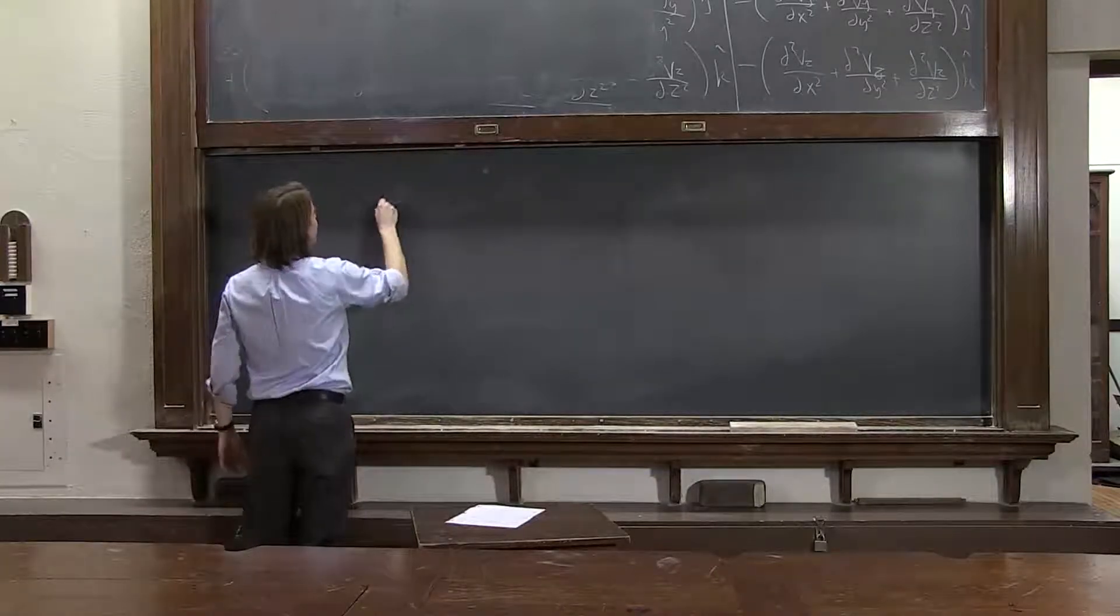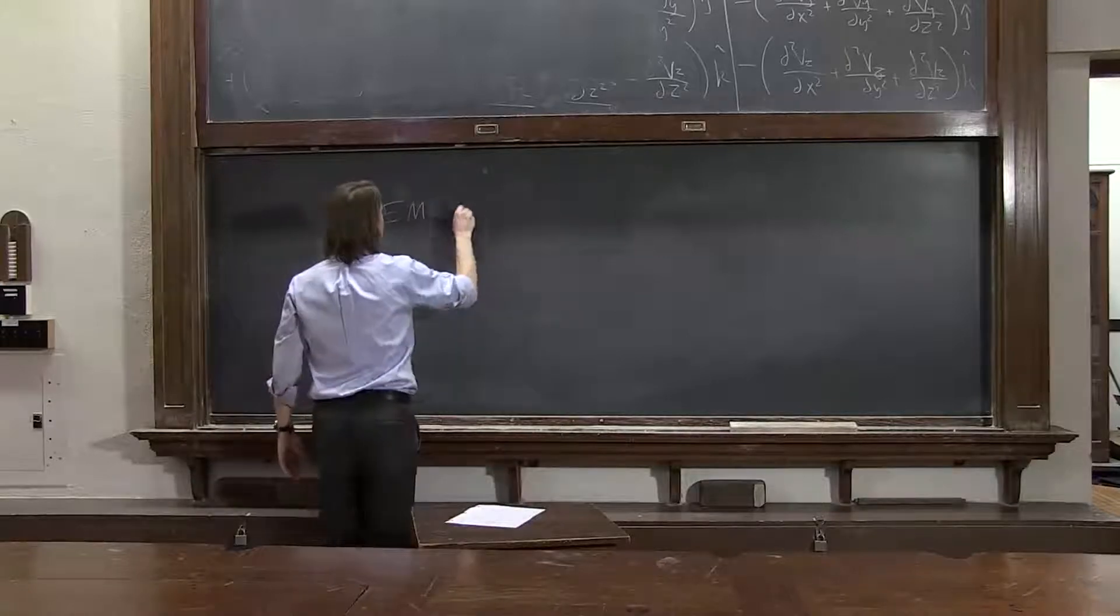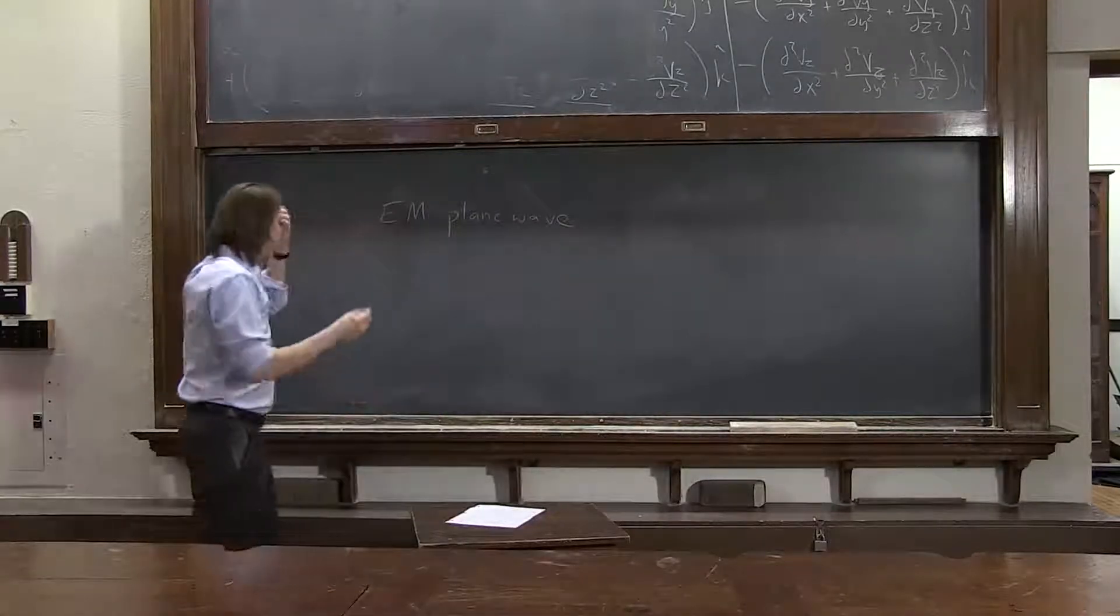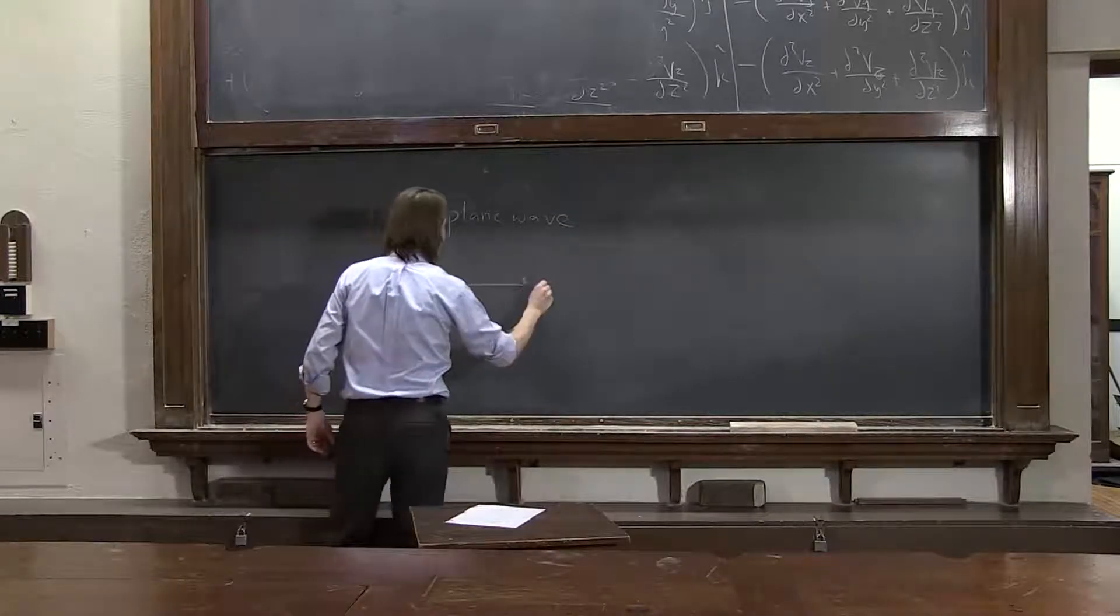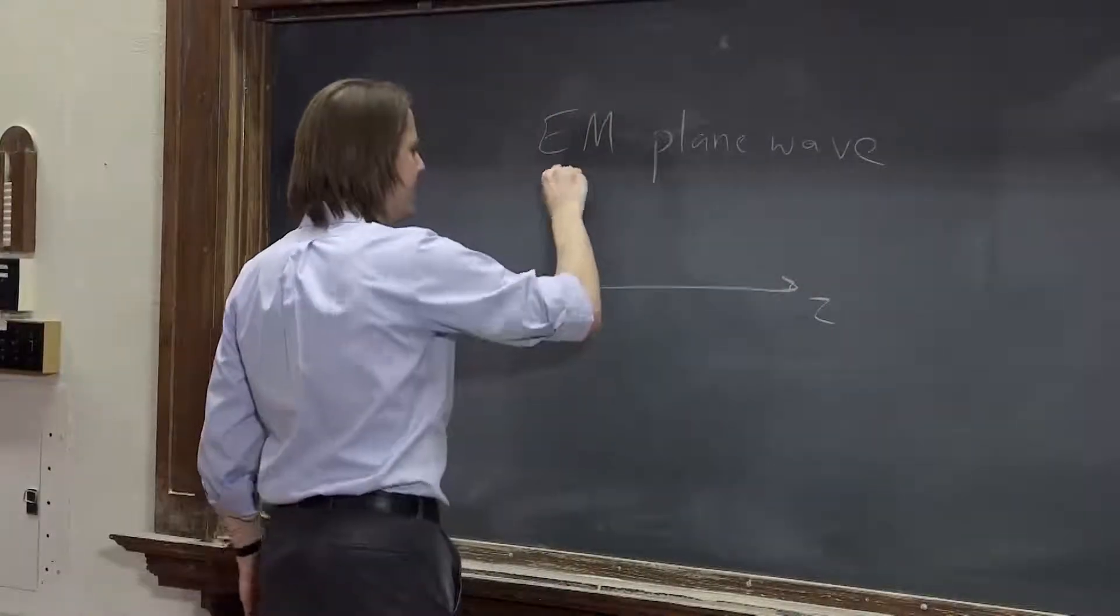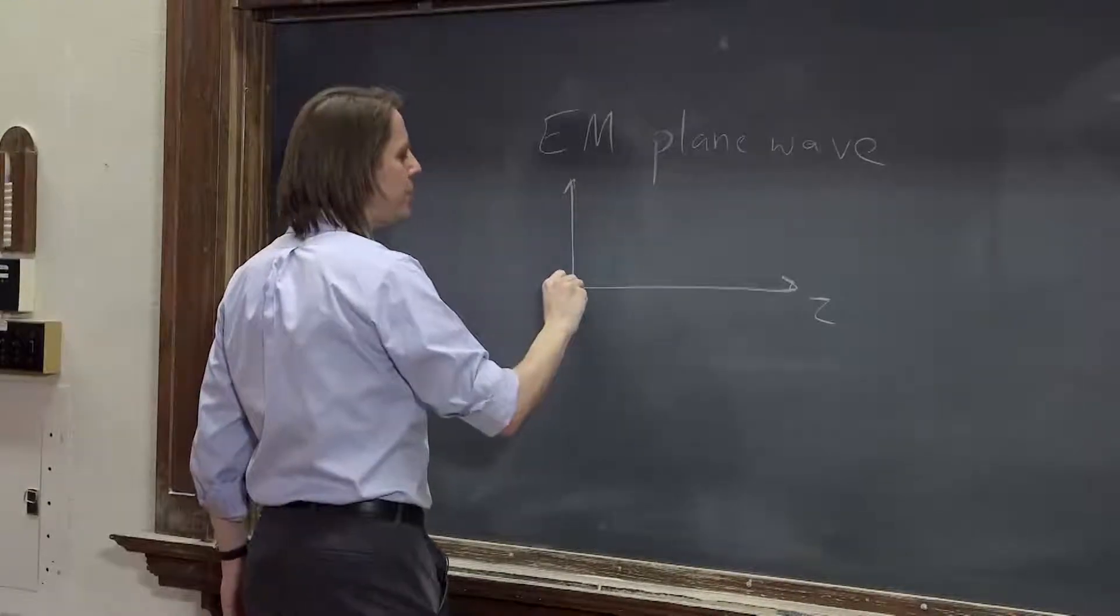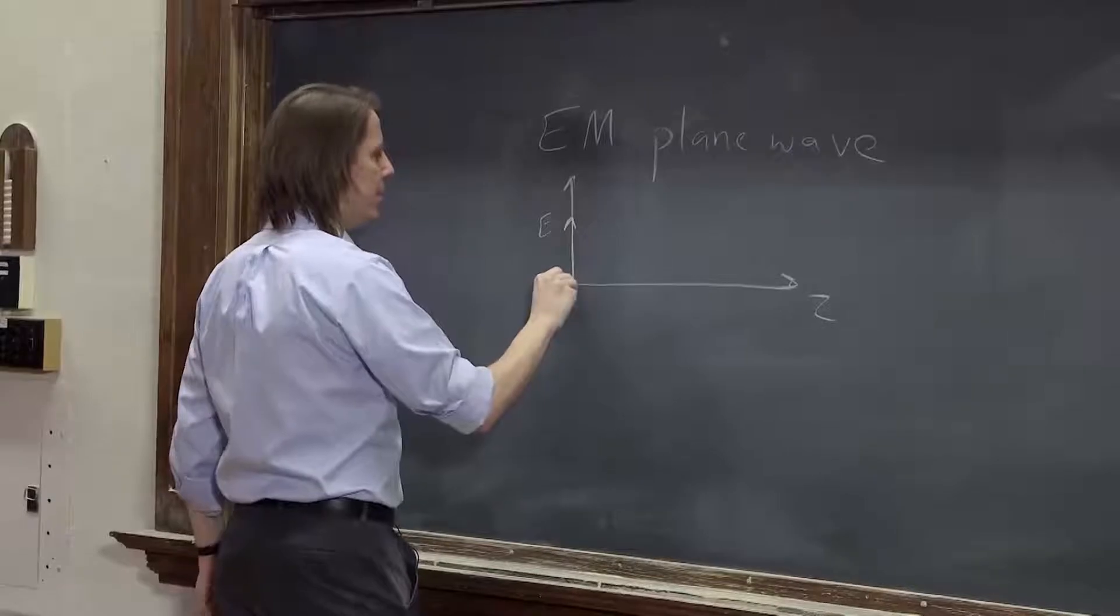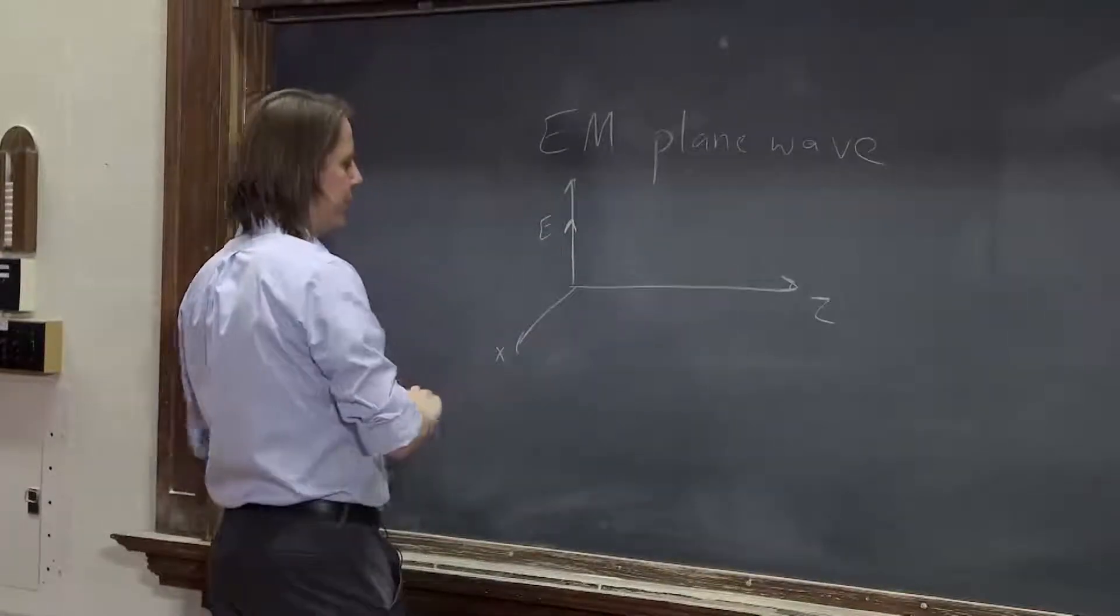And the most famous is basically an electromagnetic plane wave, which would look something like this. If it were propagating along the z-axis, it would have maybe its E field would be along here, along the, let's see if this is—oh crud, let's see if the x cross.